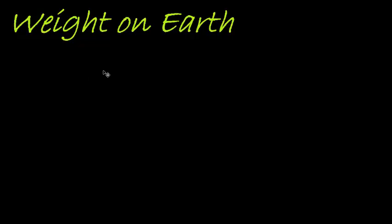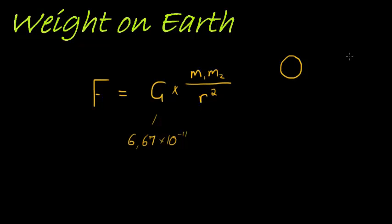In our previous video, we saw that the force between two objects can be calculated by taking the gravitational constant, which was 6.67 times 10 to the power of negative 11, multiplying that with the masses of the two objects, and dividing with the distance between their centers, the radius between the two, squared.